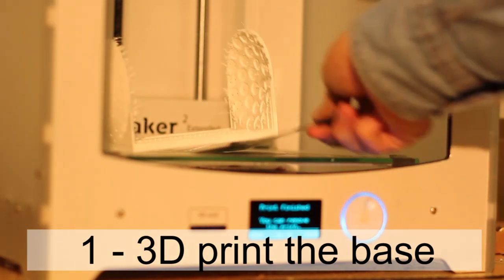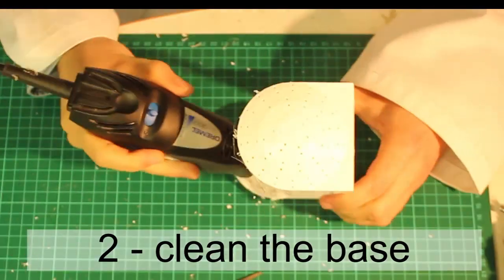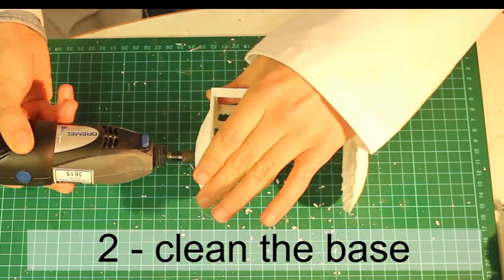First of all, 3D print the attached file without support. Clean the base using a file and drill two holes at the sides.